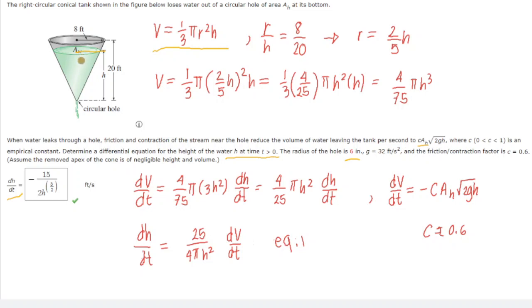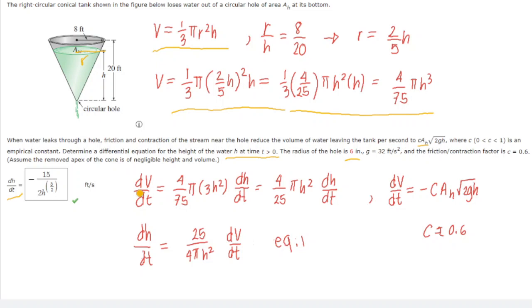By ratio and proportion, we have r/h = 8/20, so we can express r in terms of h: r = (2/5)h. Substituting into our volume equation, V = (1/3)π·((2/5)h)²·h. Squaring (2/5)h gives 4/25·h², and multiplying through — 1×4 in the numerator and 3×25=75 in the denominator — gives us the volume purely in terms of h: V = (4/75)πh³.